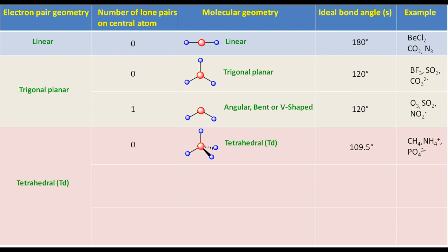If the electron pair geometry is tetrahedral and the number of lone pairs on the central atom is one, then ignore the lone pair. This will result in trigonal pyramidal molecular geometry. The ideal bond angle will be 109.5 degrees. NH3, H3O+, and PCl3 are examples of this type of molecule.